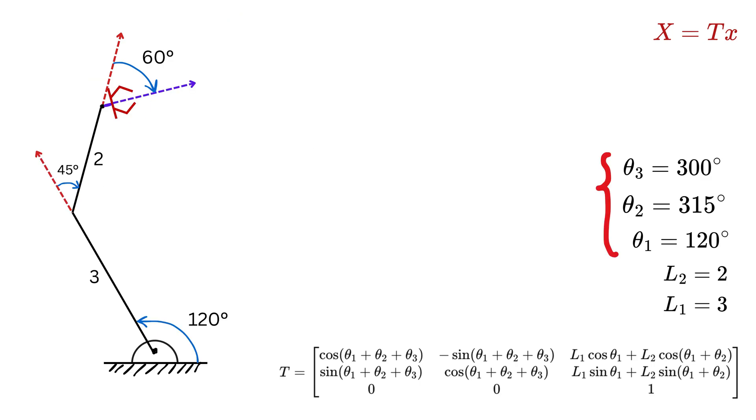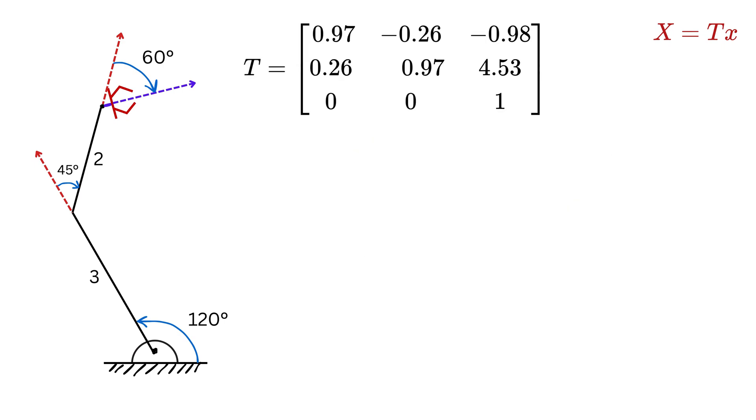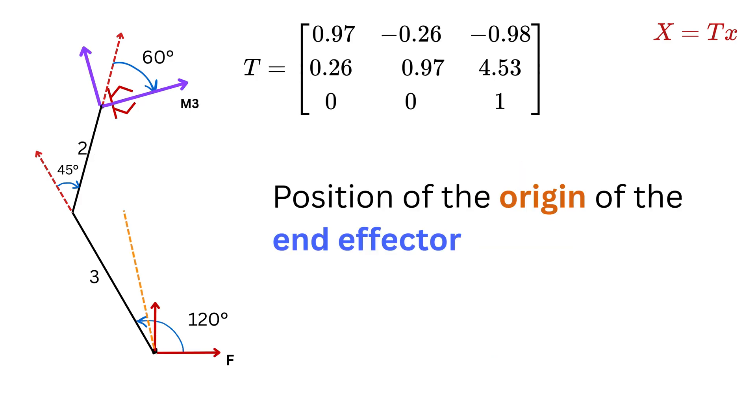Now that we have all three angles and the link lengths L1 is 3 and L2 is 2, we can plug everything into our transformation matrices and get the final T matrix. This will be our final T matrix. Now that we have the full T matrix, what exactly are we trying to find? We're looking for the position of the origin of the end-effector frame M3, but we want that position in the fixed frame F.